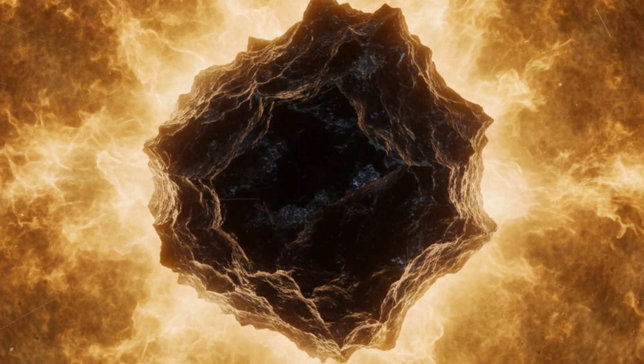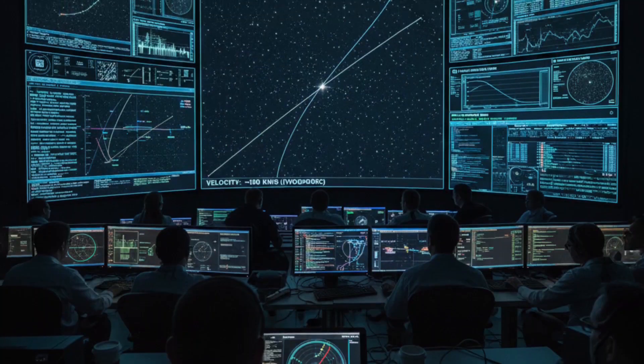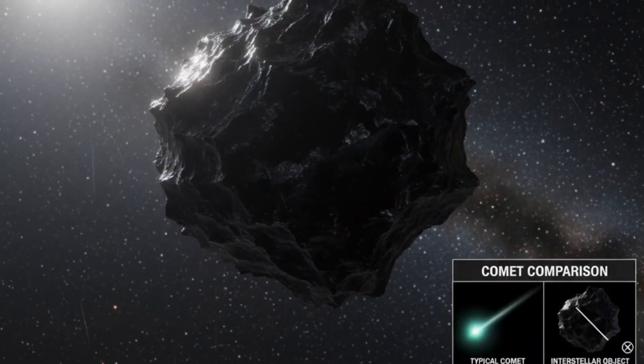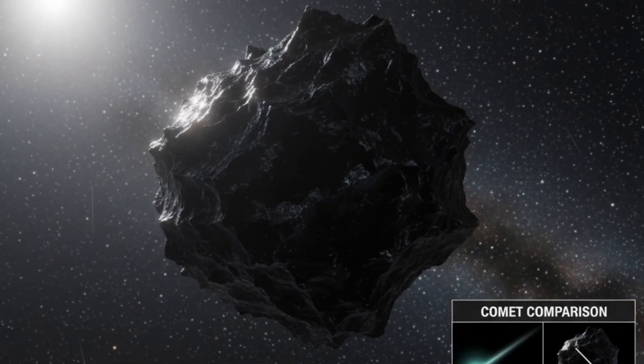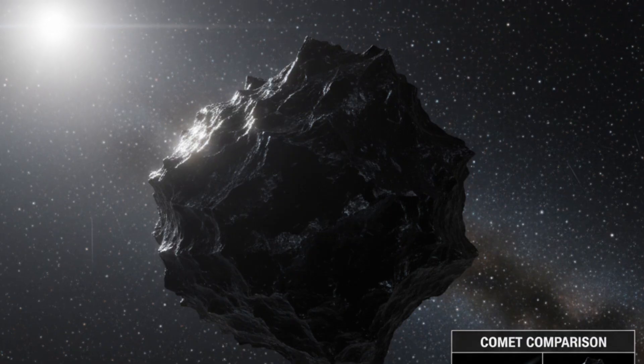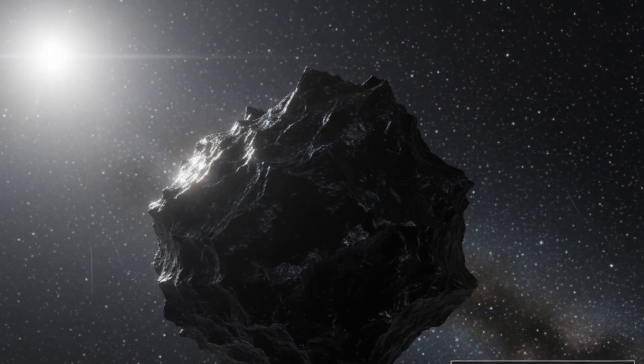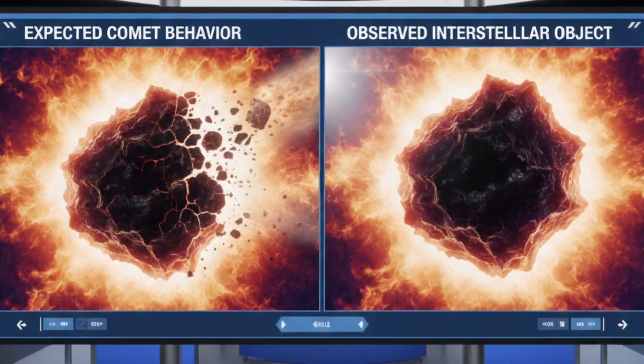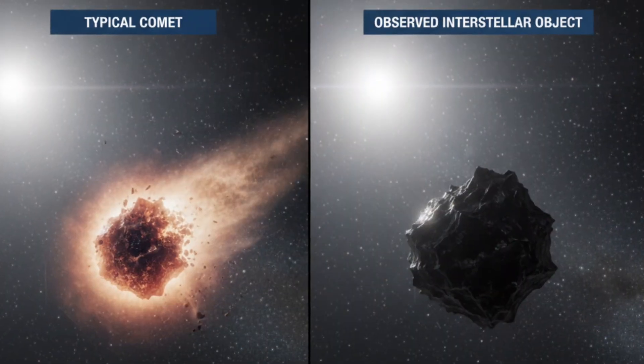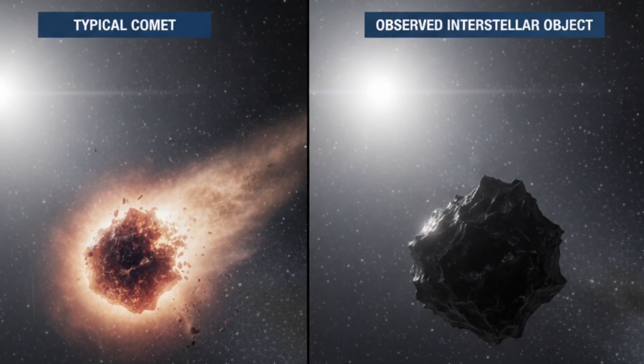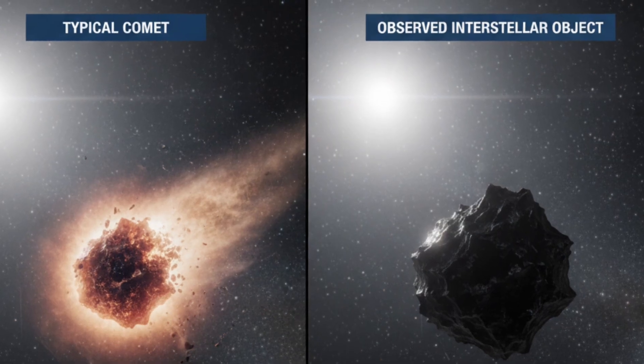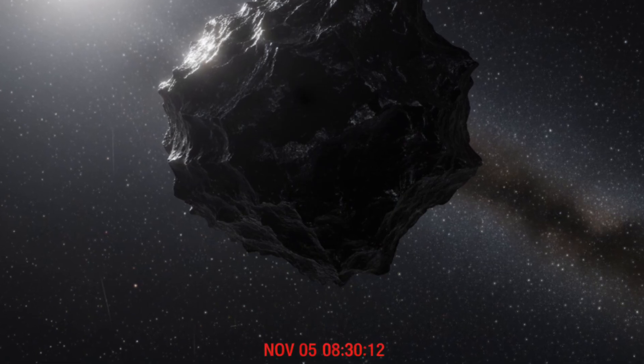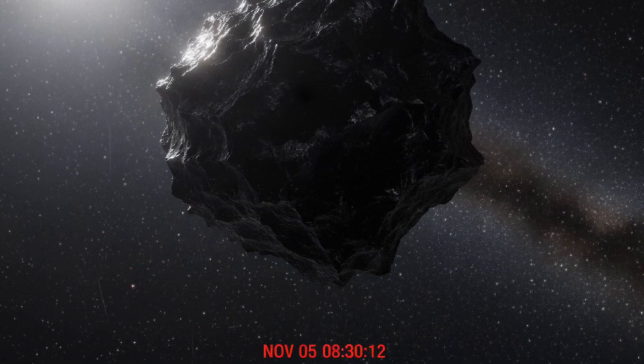Nobody expected the object to survive its last approach to the Sun. For weeks, astronomers had been tracking 3IATLAS as it raced into the inner solar system on a hyperbolic path, behaving like no comet or interstellar visitor ever recorded. But when the Virtual Telescope Project finally captured the first high-resolution images on November 5th, the sight stunned everyone.